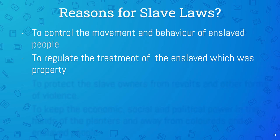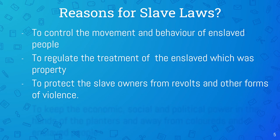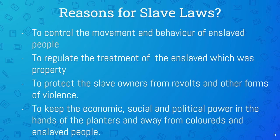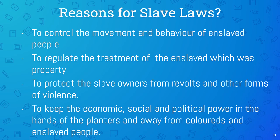They wanted the enslaved to be treated correctly because it would have kept them from revolting, made them work harder, and kept them from being damaged and unable to work. It was also to protect the slave owners from revolts and other forms of violence. The laws kept the enslaved in line and also maintained the economic, social, and political power in the hands of the planters — blacks and slaves were not to have money, social status, or any position in government.